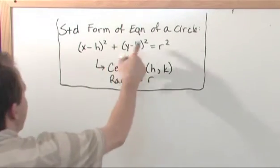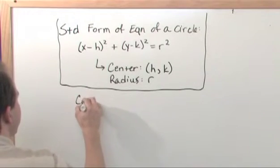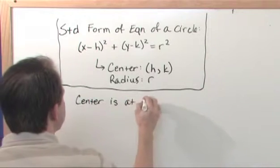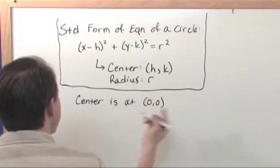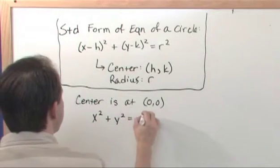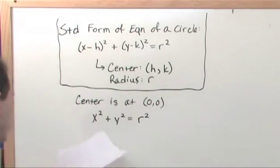So that would mean h and k were 0, and so if the center of the circle is at the origin, 0, 0, then this reduces to x squared plus y squared is equal to the radius squared, if the circle is centered at 0, 0.